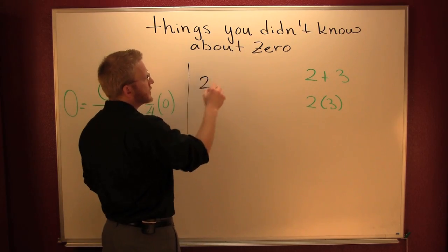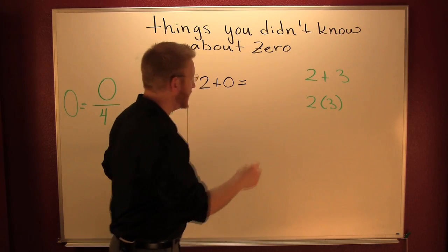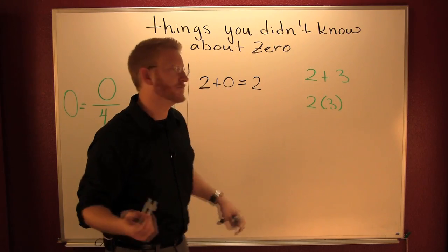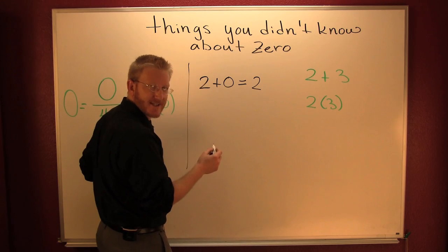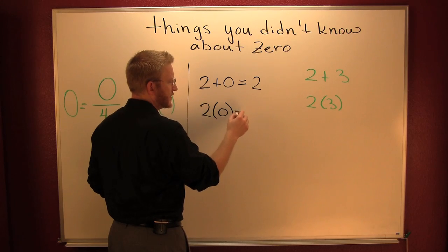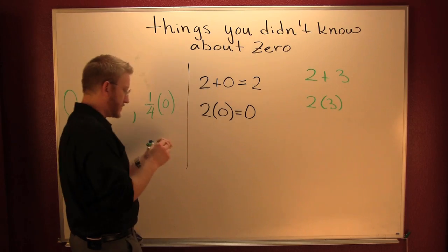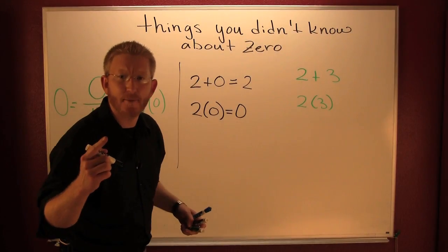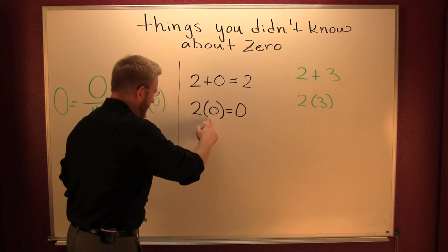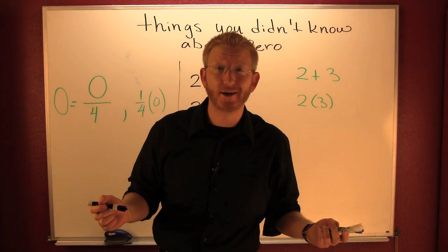What's two plus zero? That's two. When zero's your friend, he doesn't change you. But what happens if you let zero get too close? What's zero times two? That's zero. All that abuse over the years — when you let zero get too close, zero punks you. He's like, 'Who's nothing now, two? Who's nothing now?' Those are a couple of things you didn't know about zero.